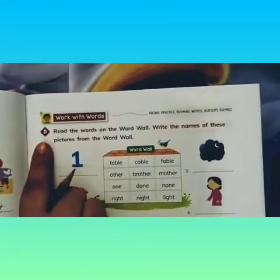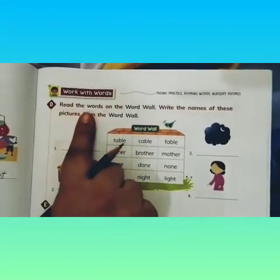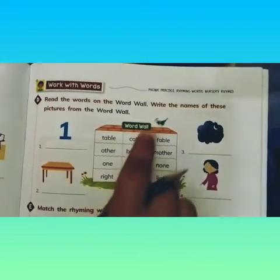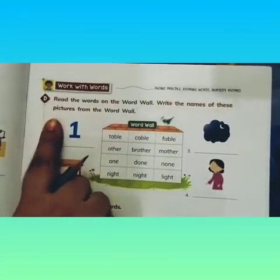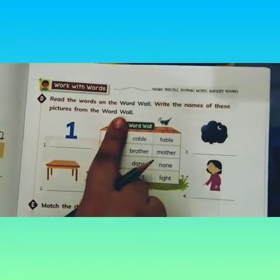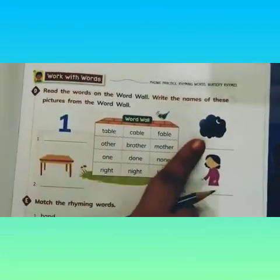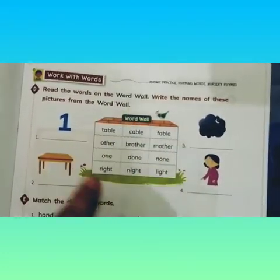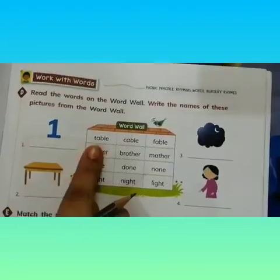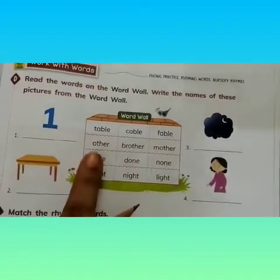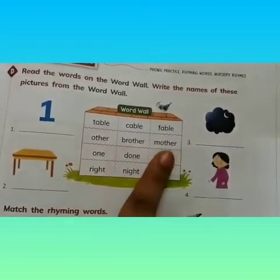Let's come to page number 63, Part D. Read the words on the word wall. This is the word wall, and you have to read these words. Write the names of these pictures from the word wall. After looking at these pictures, you have to write their names. The word groups are: table, cable, fable; other, brother, mother.